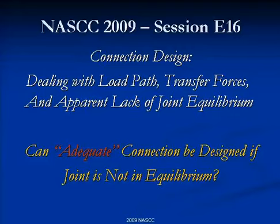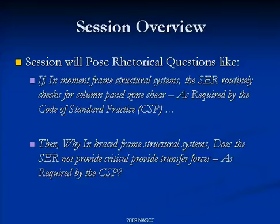Your envelope forces would be hopelessly out of equilibrium, particularly with signed forces — the largest tension and compression for each member. So we'll deal with that. A rhetorical question: if in moment frame structural systems the engineer of record routinely checks column panel zone shear, then why in a braced structural system does the engineer of record not provide critical load transfer forces as required by the Code of Standard Practice? I find many people check columns for web doublers but very few routinely provide transfer forces.